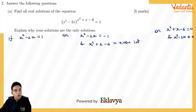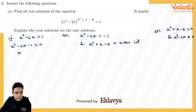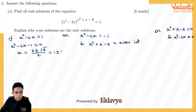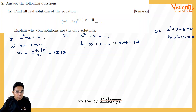In the first scenario, x²-2x = 1 means x²-2x-1 = 0. Using the quadratic formula, x = (-(-2) ± √(4+4)) / 2, giving x = 1 ± √2. Whatever x²+x-6 comes out to be — positive, negative, or zero — doesn't matter, because if the base is 1 the result is always 1. So we have two solutions so far.